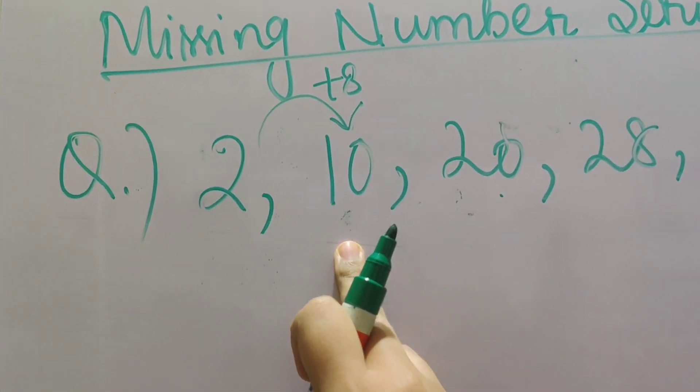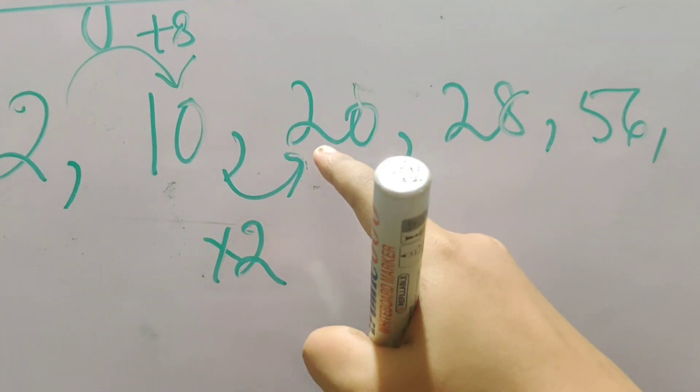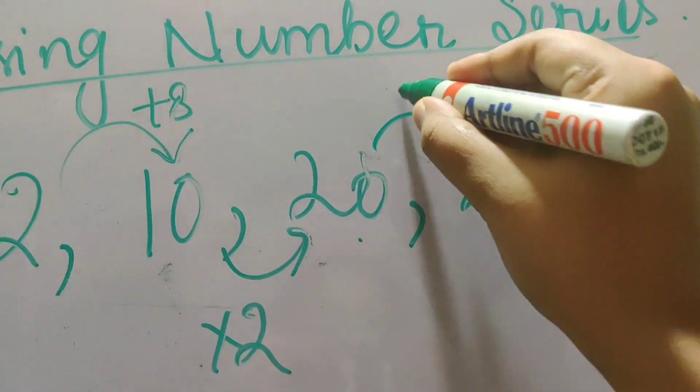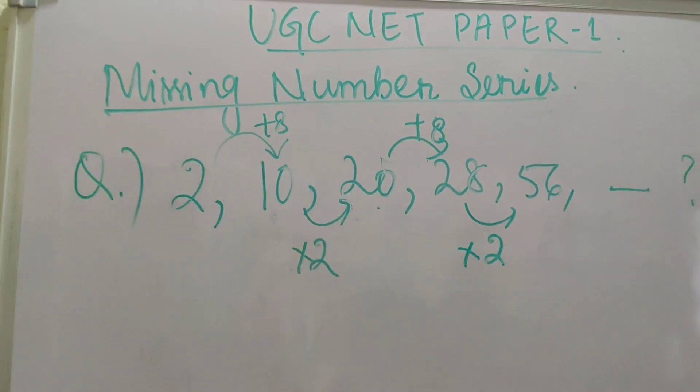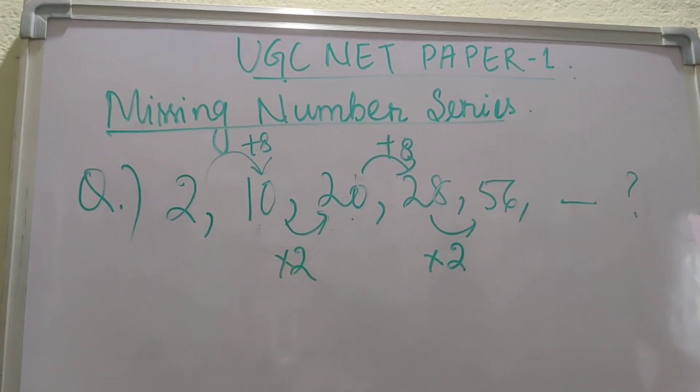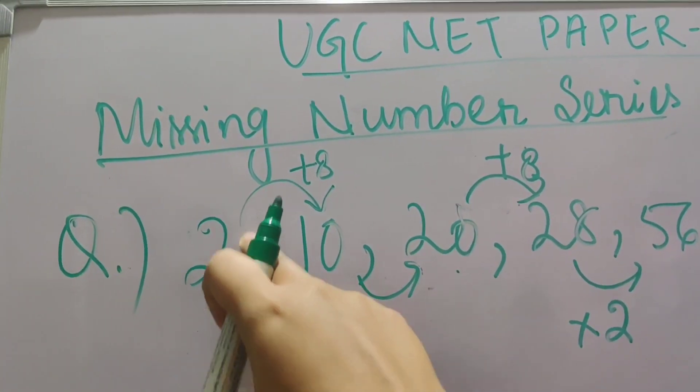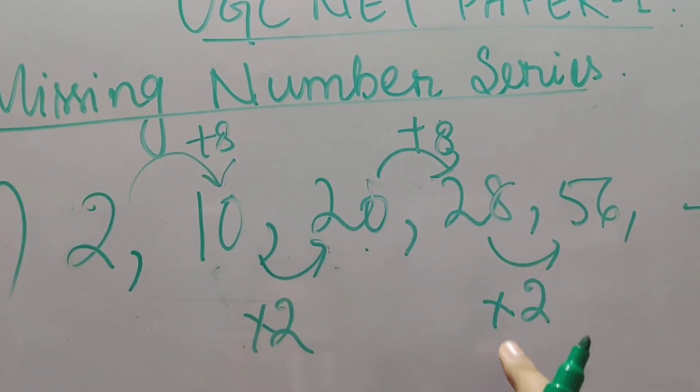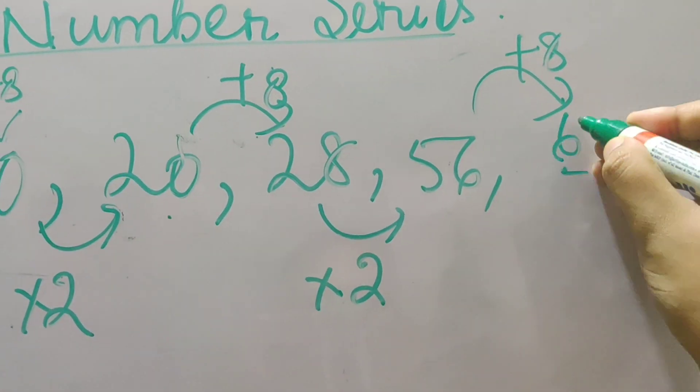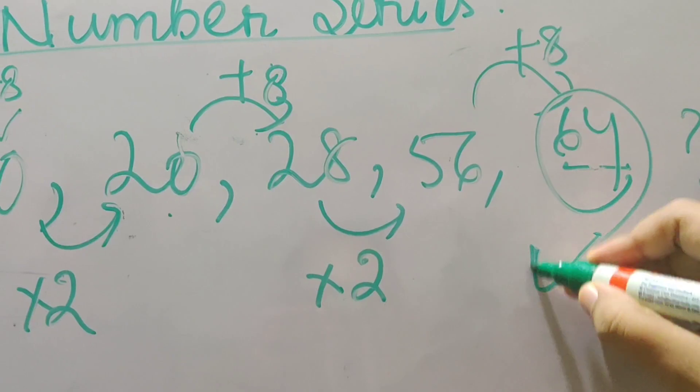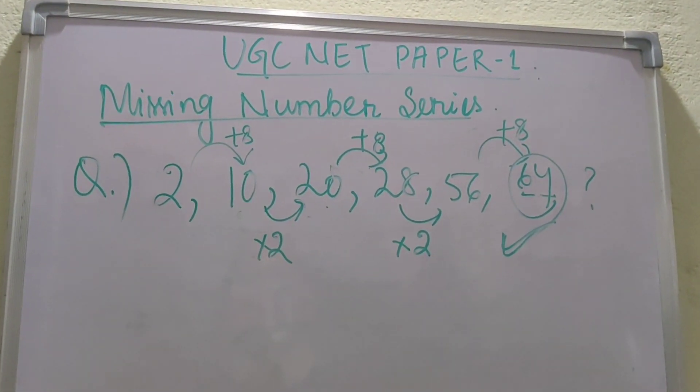So 2 plus 8 is 10, but 10 into 2 is 20. Now 20 plus 8 is 28 and 28 into 2 is 56. So here we just did a mix of multiplication and addition. We just followed a pattern where we did plus 8, into 2, plus 8, into 2. The next will be plus 8. Now 56 plus 8 is 64. So 64 is the answer. I hope that you understood how we are solving these types of questions.